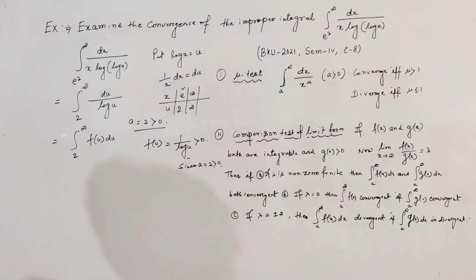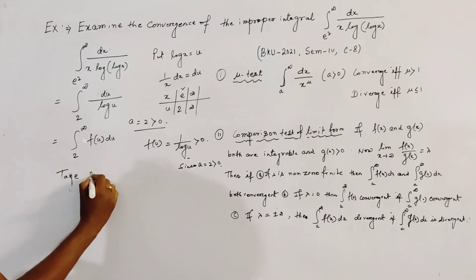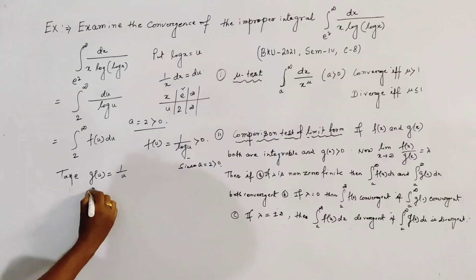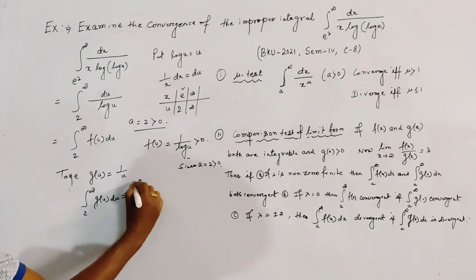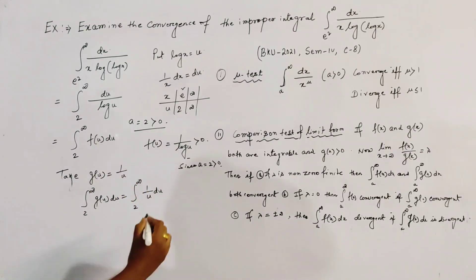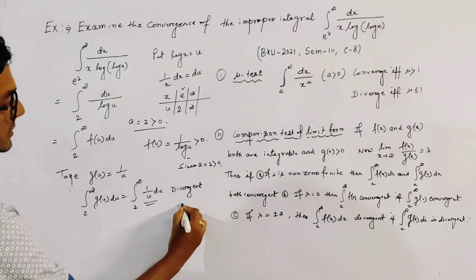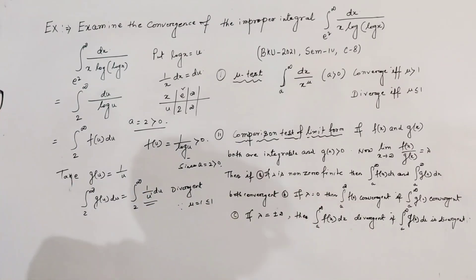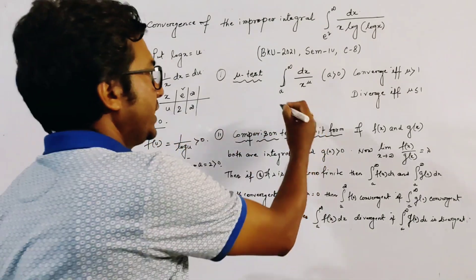We take g(u) = 1/u. Then the integral from 2 to infinity of g(u) du equals the integral from 2 to infinity of 1/u du, which is divergent. This is because u to the power 1 means μ = 1, which is less than or equal to 1, so this integral is divergent by the μ-test.